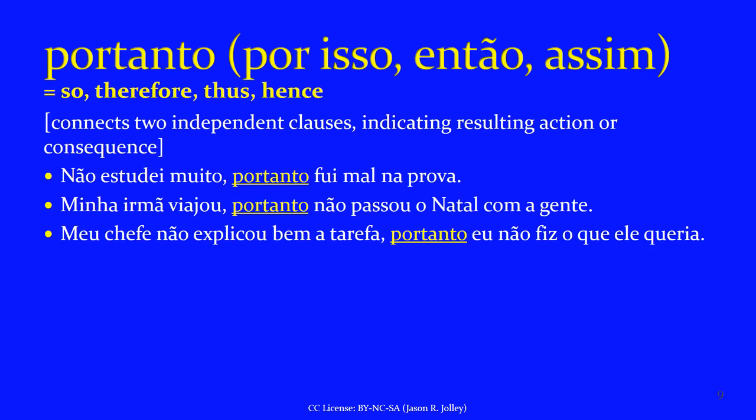Moving on to another coordinated conjunction: PORTANTO, and other forms like POR ISSO, ENTÃO, ASSIM. PORTANTO means 'so,' or more formally, 'therefore,' 'thus,' or 'hence.' PORTANTO connects two independent clauses indicating a resulting action or consequence. 'Não estudei muito, portanto fui mal na prova' — I didn't study a lot, so I didn't do well on the test. 'Minha irmã viajou, portanto não passou o Natal com a gente' — my sister traveled, so she didn't spend Christmas with us. 'Meu chefe não explicou bem a tarefa, portanto eu não fiz o que ele queria' — my boss didn't explain the task well, so I didn't do what he wanted.